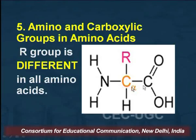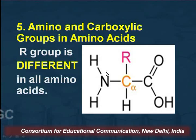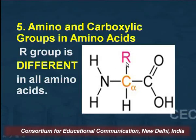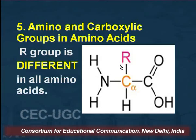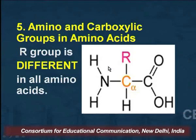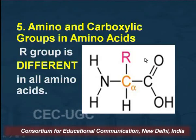We say amino acids are amphoteric in nature because of the presence of both the amino group and the carboxylic group, and they occur as zwitterions. They occur as zwitterions because the amino group modifies the properties of the carboxylic group — there is interaction between these two groups.